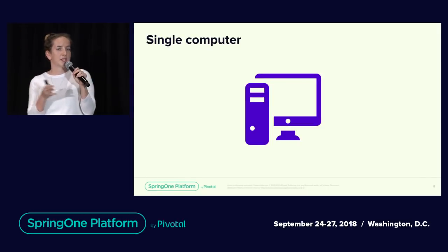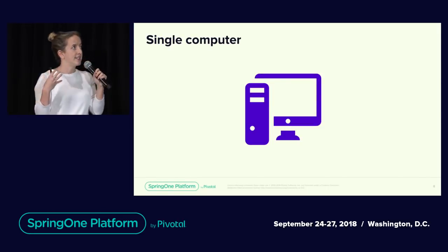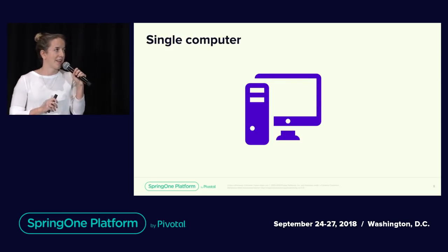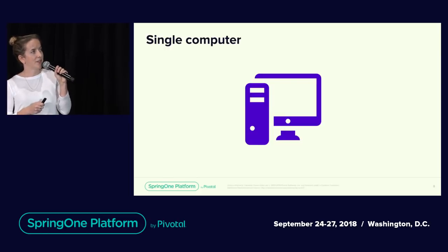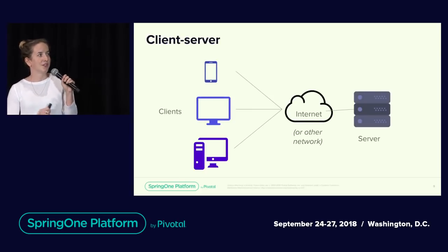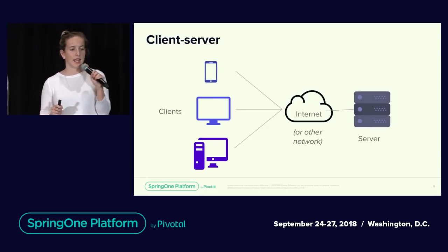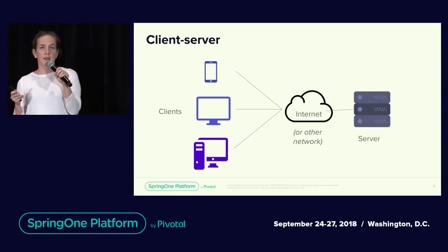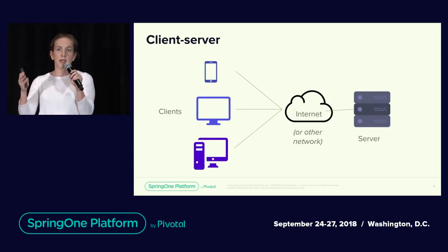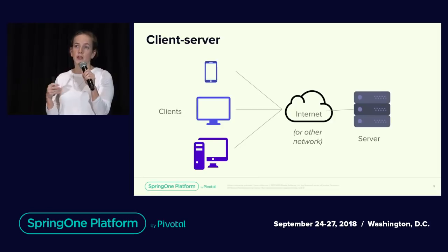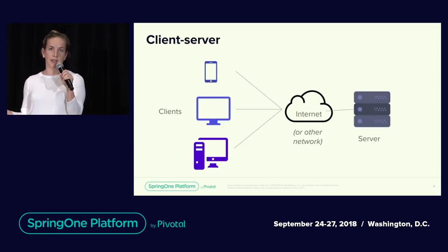At one end of the spectrum you have a single computer — an old school computer where all your processes are on this computer. Life was simple, you had a single user, single functionality. Then more users wanted access to that functionality, and here you see the client-server model. Most people don't think about this as a distributed system, but it is a step on that spectrum because of the motivations for many users to have access to a single functionality.